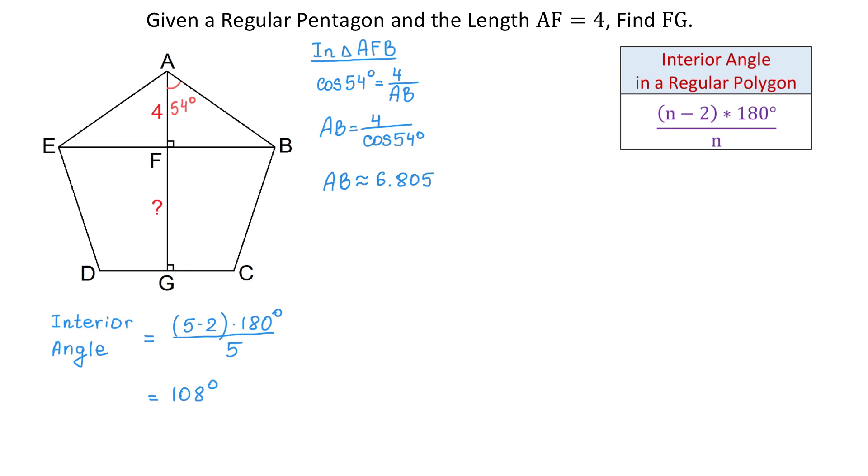So we found one side of the pentagon and that is 6.805. Next, we will connect the points A and C and we will form the right triangle AGC. In this triangle, GC is half of 6.805 and that is 3.4025.